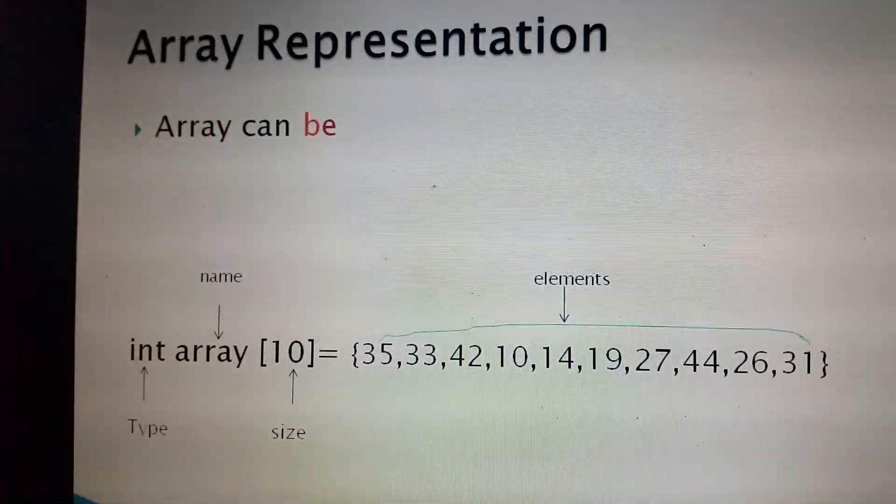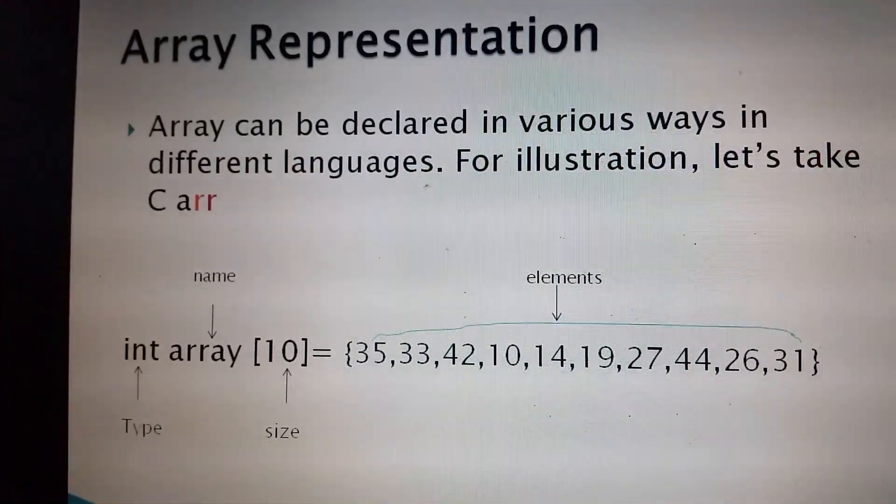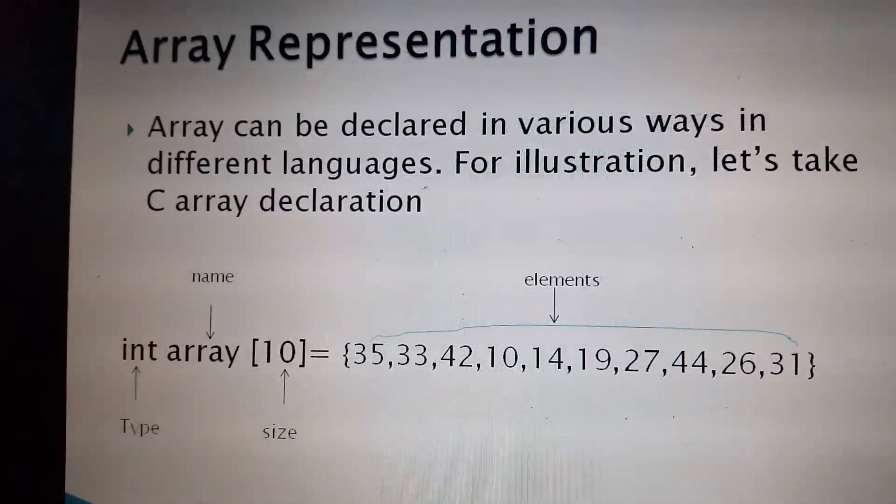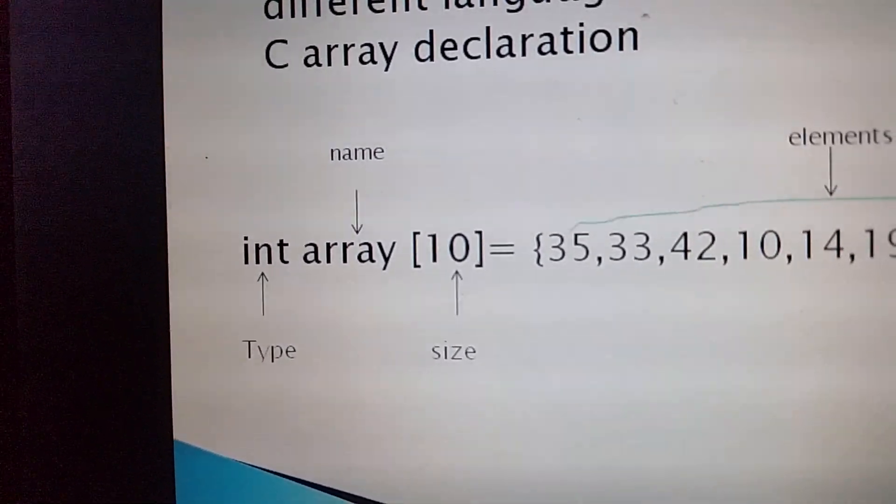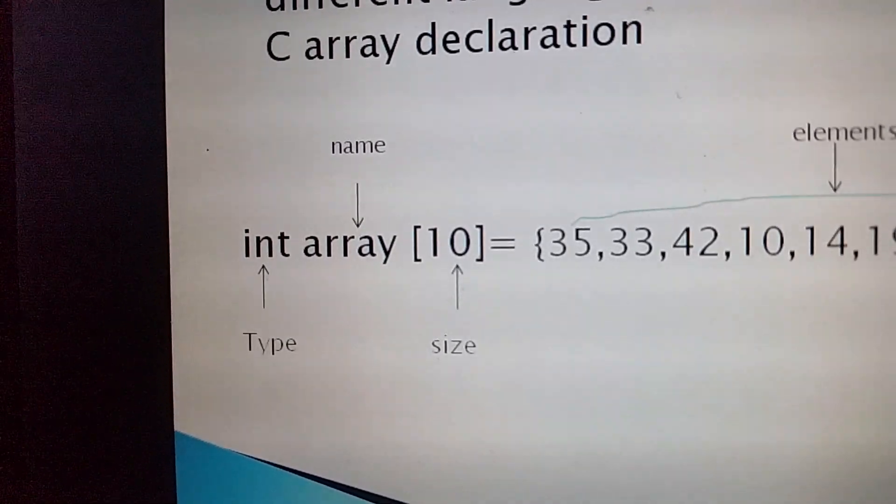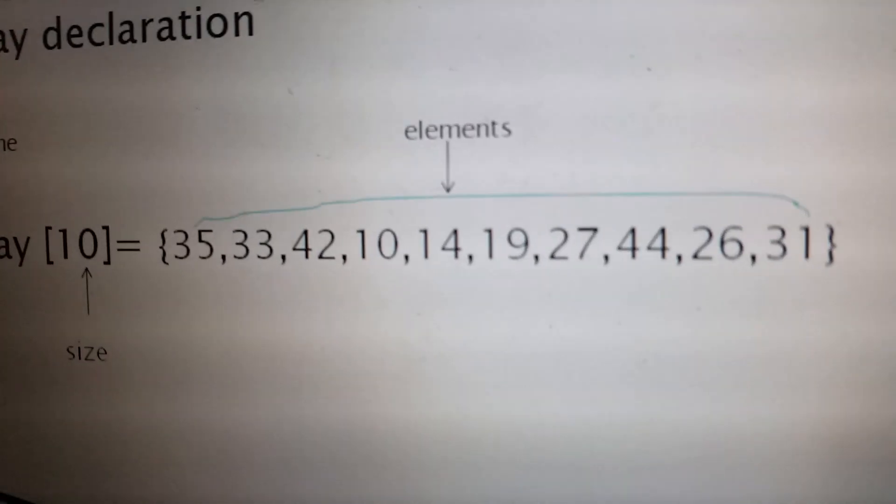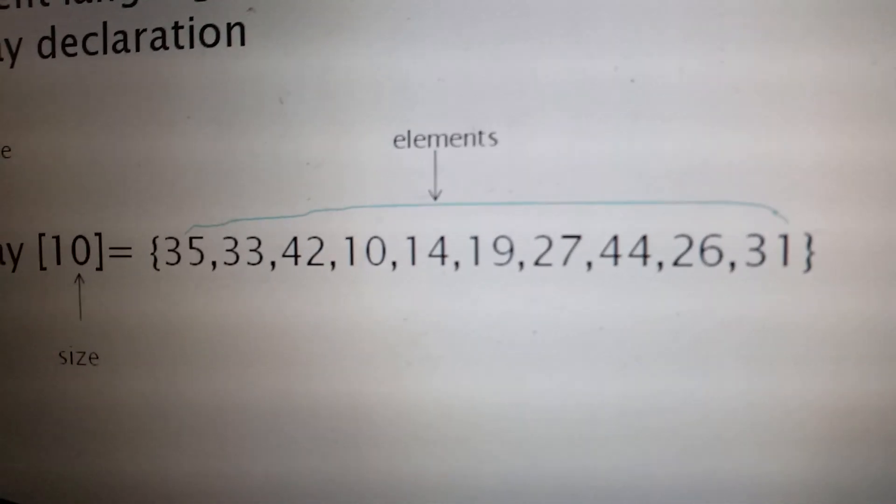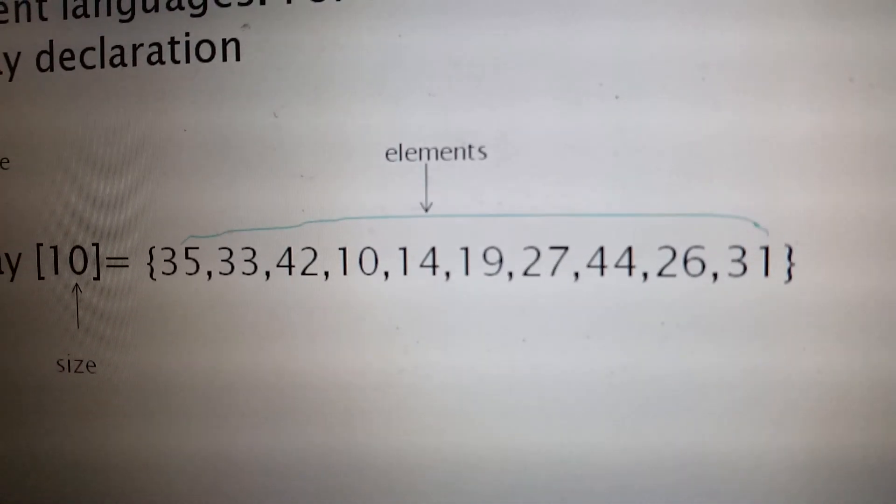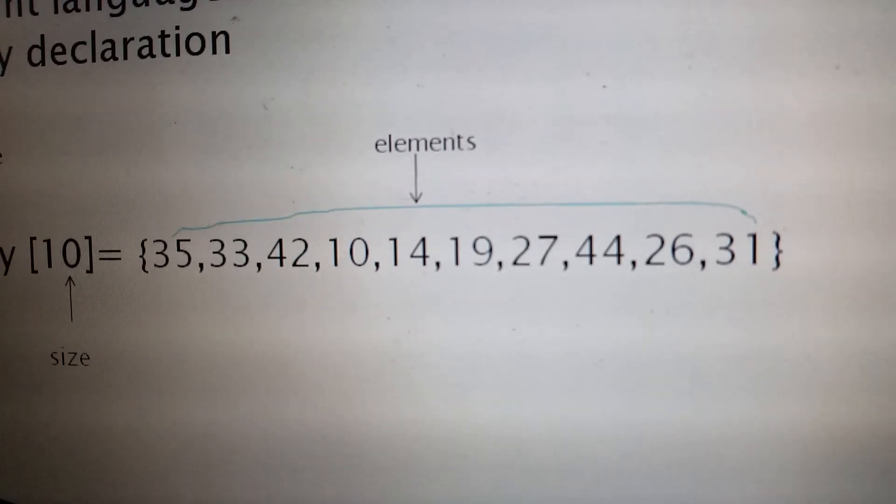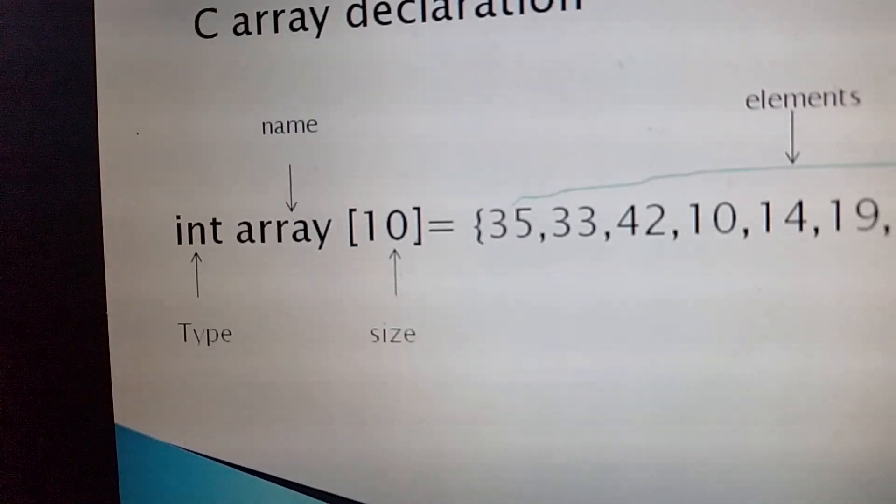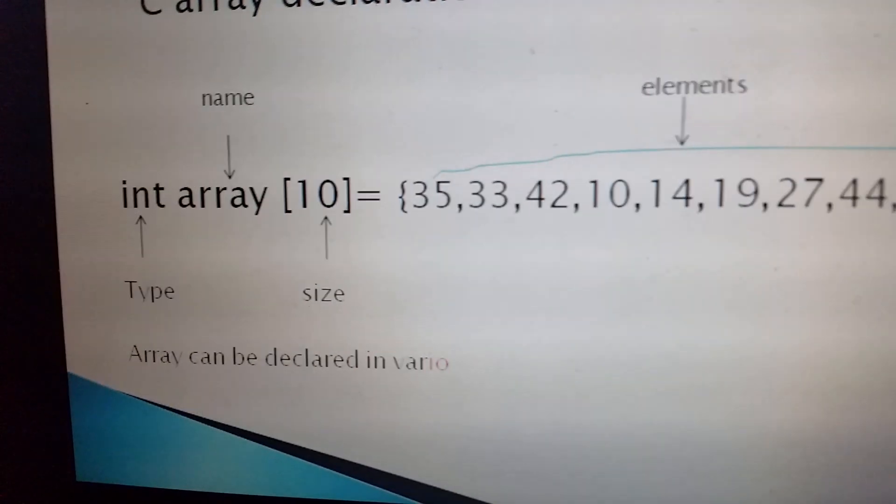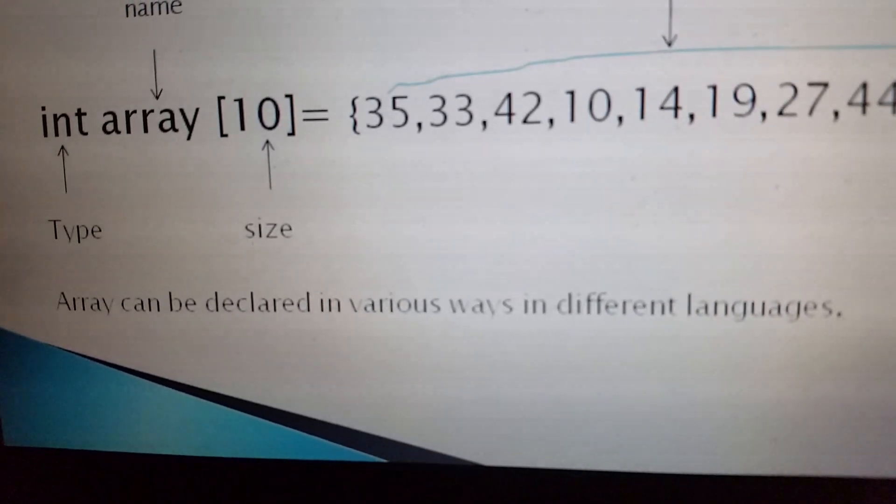We have array representation. Array can be declared in various ways in different languages. For illustration, let's take C array or C array declaration. We have integer array[10]. Integer is the type, array is the name, and 10 is the size. So we have 10 array elements with values 35, 33, 42, 10, 14, 19, 27, 44, 26, and 31. So array can be declared in various ways in different languages.